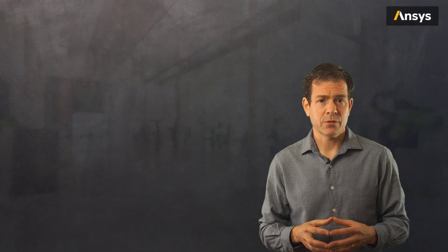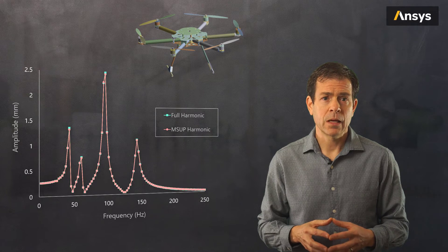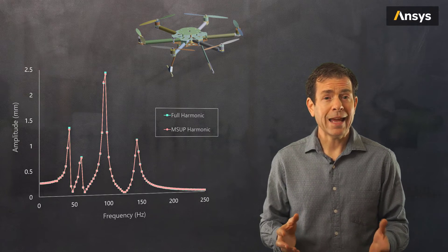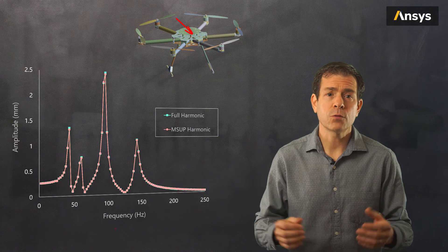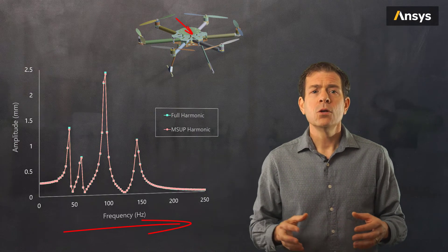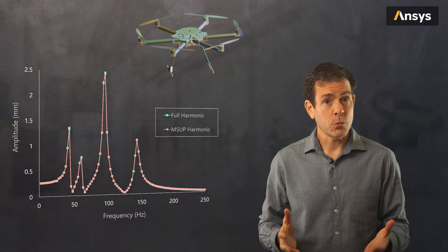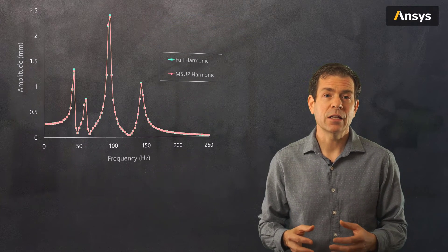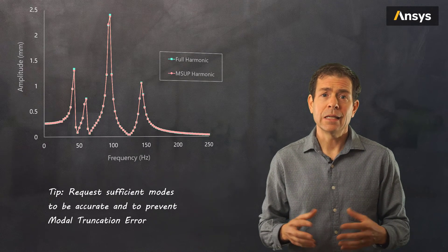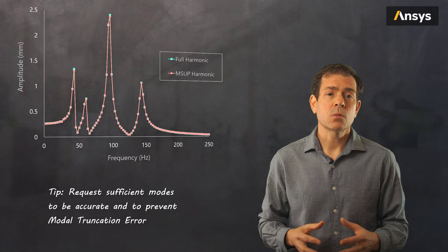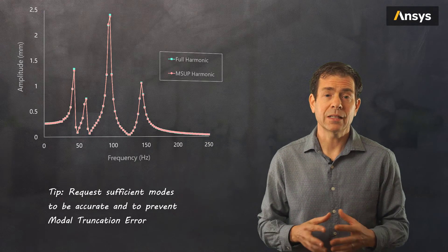In this frequency response graph, we compare the full and the mode superposition methods. The graph shows the expected amplitude of vibration at a specific location over a range of frequencies. Notice how closely the two graphs match each other. In order for the mode superposition method to be accurate, a sufficient number of modes needs to be included in the solution. If not, we will experience what is called mode truncation error. We'll learn more about this in a later section.